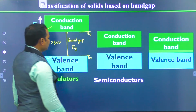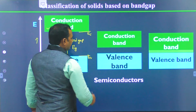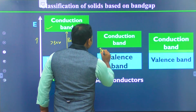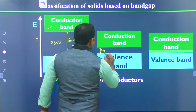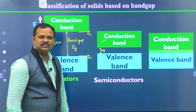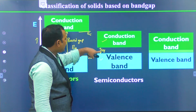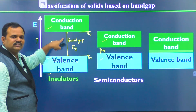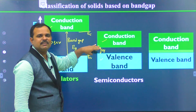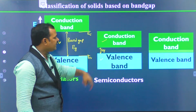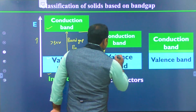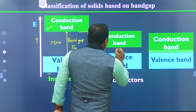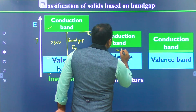There is another type of material where the bandgap is smaller — this is the valence band and this is the conduction band of the semiconductor. If you can see here, the bandgap of the semiconductors is smaller compared to insulators, but there still exists a bandgap. This kind of material is called semiconductors. In this case, the bandgap energy is of the order of 1 electron volt.